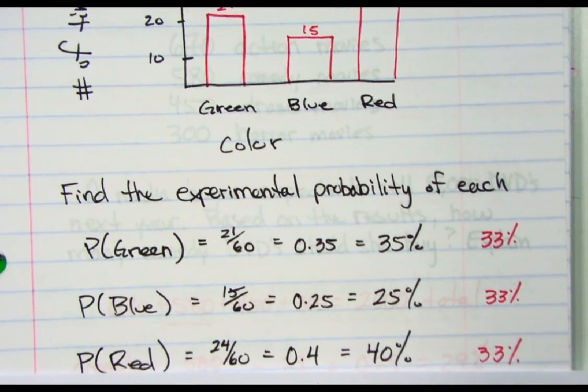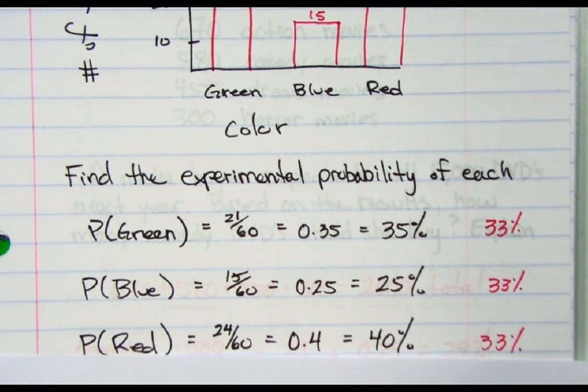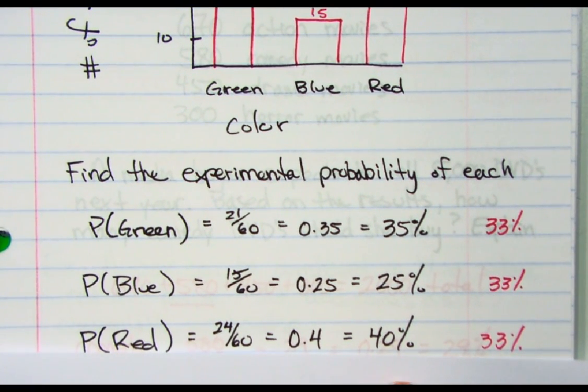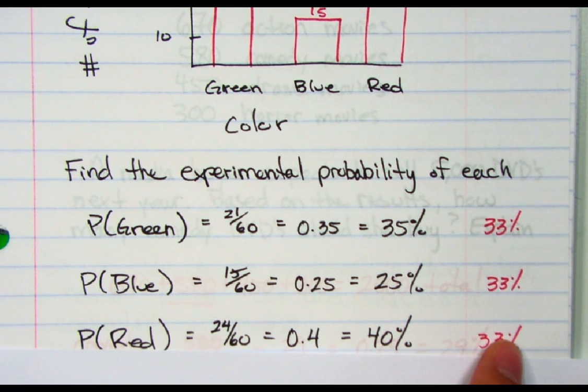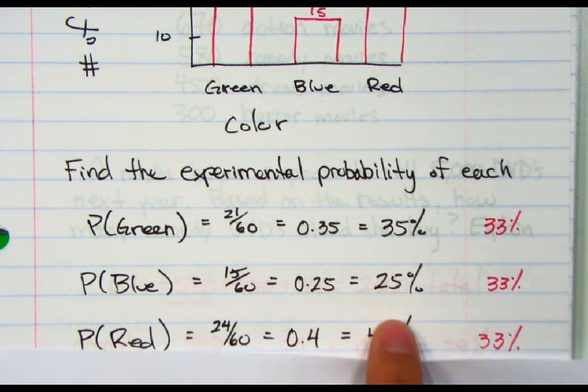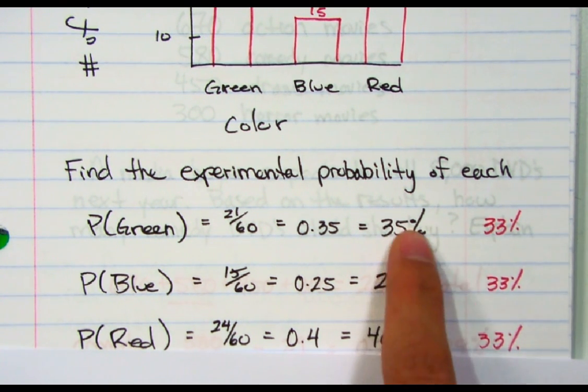And then the probability of red. Probability of red was 24 out of 60, which is 40%, and that was a lot more than what I was looking for. So this is in theory what it's supposed to be, but in reality, other factors come involved here.